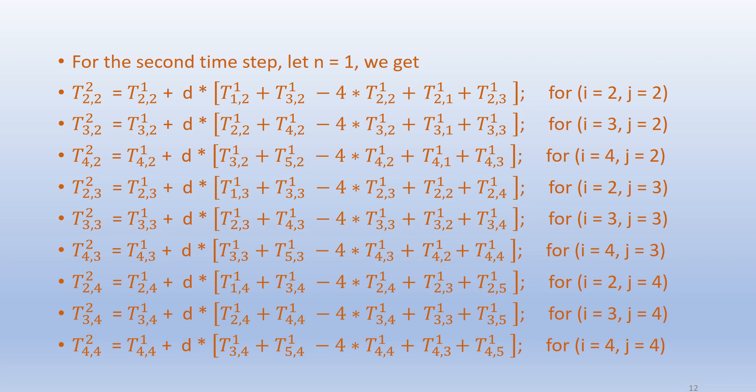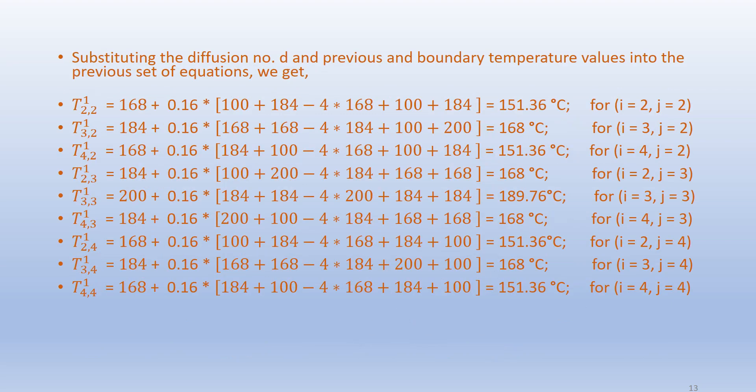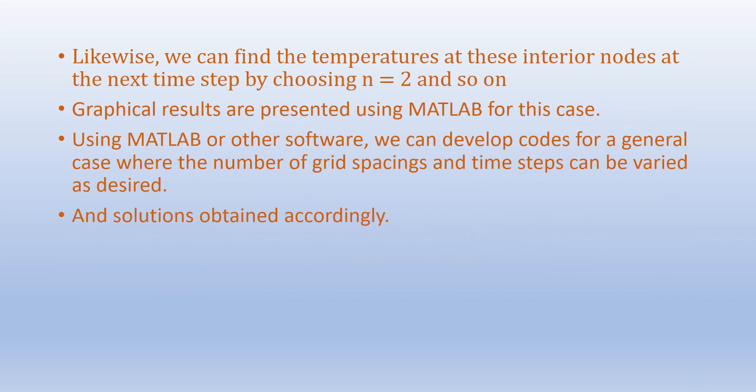For the second time step, n=1. We get: T[2,2]^2 = T[2,2]^1 + d×(T[1,2]^1 + T[3,2]^1 - 4·T[2,2]^1 + T[2,1]^1 + T[2,3]^1), for node i=2, j=2. Substituting the diffusion number d and the previous temperature values, we get T[2,2]^2 = 151.36 degrees Celsius. Similarly, temperatures for the other interior nodes are obtained. Likewise, we can find temperatures at interior nodes at subsequent time steps by choosing n=2 and so on.